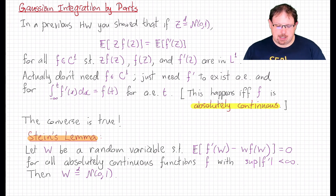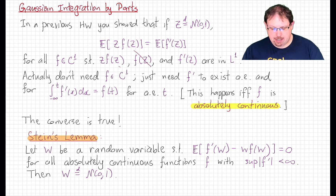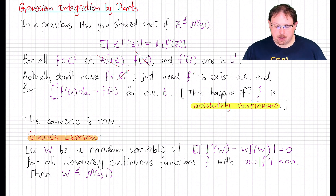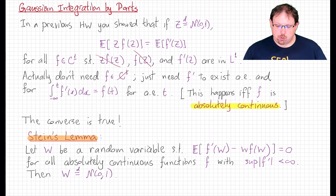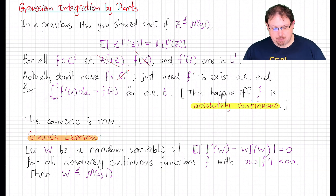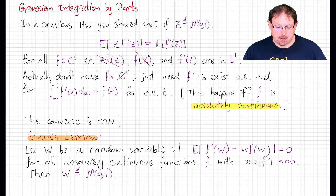But actually, you didn't need so many assumptions. If you're a little more careful, you only need to assume that f'(z) is in L1, and the other terms actually follow. What's more, we don't really need f to be in C1. All that's needed is that f is a function whose derivative exists at almost every point, and for which this version of the fundamental theorem of calculus holds: that f being L1 vanishes at minus infinity appropriately, and the integral from minus infinity up to t of f' against Lebesgue measure recovers the value of f at t for almost every t.